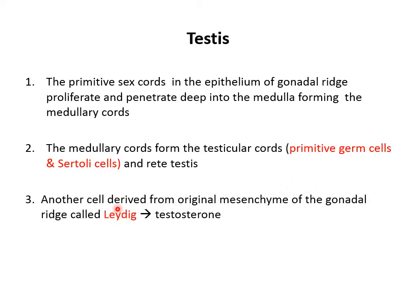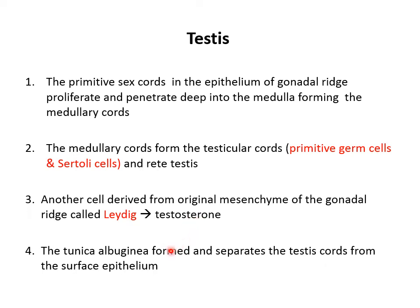Another cell type derived from the gonadal ridge mesenchyme is the interstitial cell of Leydig. The interstitial cells of Leydig secrete testosterone. The tunica albuginea then forms and separates the testicular cords from the surface epithelium.